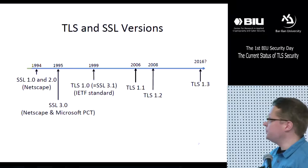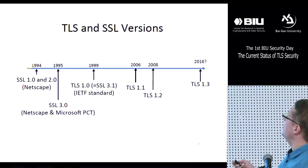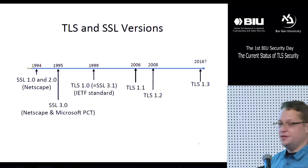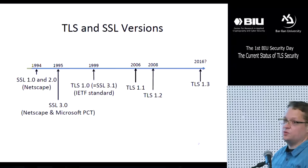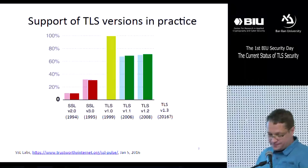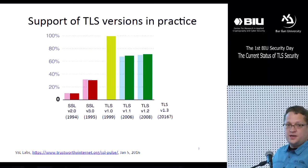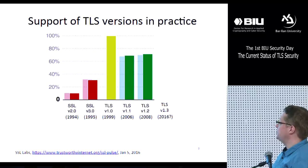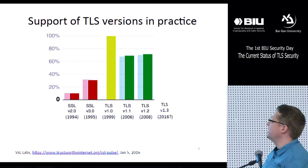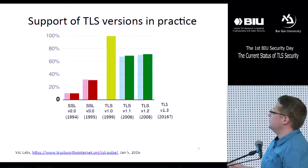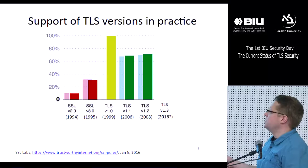Here's an overview of different TLS versions. In this talk I will discuss TLS 1.3, which is going to be finalized hopefully this year. The current version of TLS is TLS 1.2, standardized in 2008. TLS 1.2 is the most recent version, but the most widely used version is TLS 1.0, supported by nearly 100% of all web servers. Even old SSL versions, considered insecure today, are still used by a surprisingly large number of web servers.